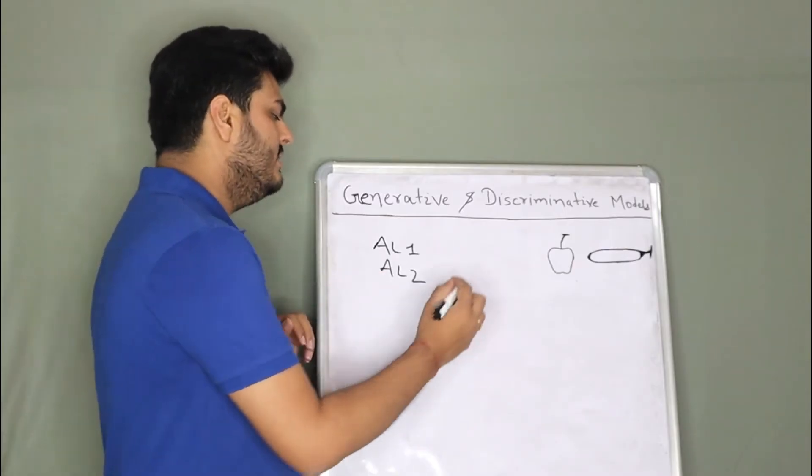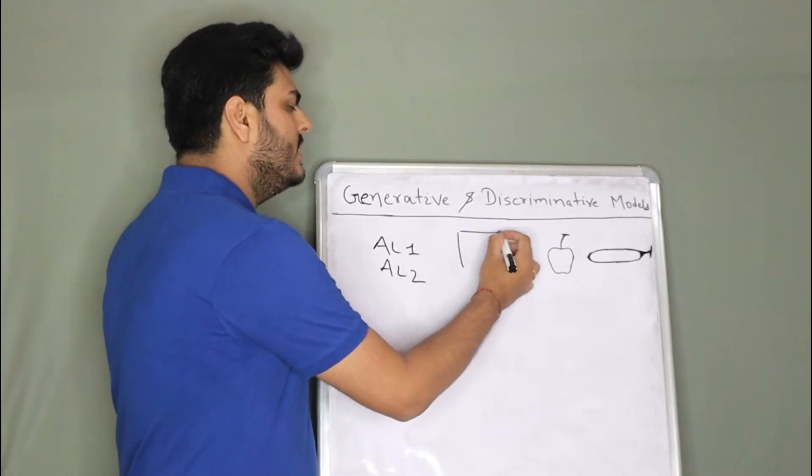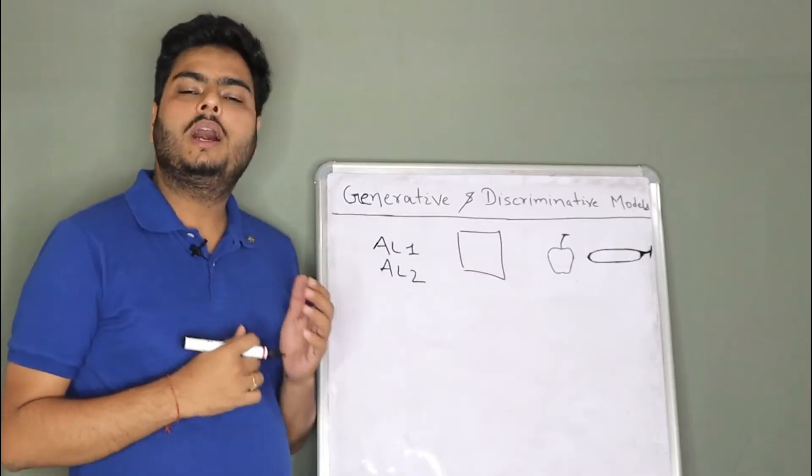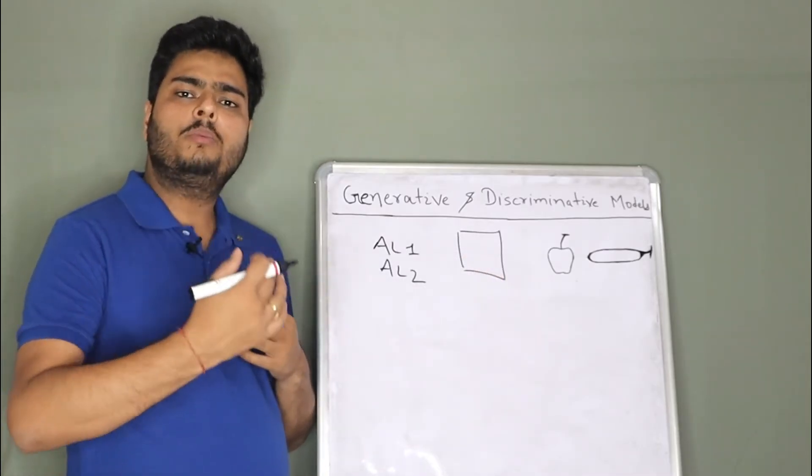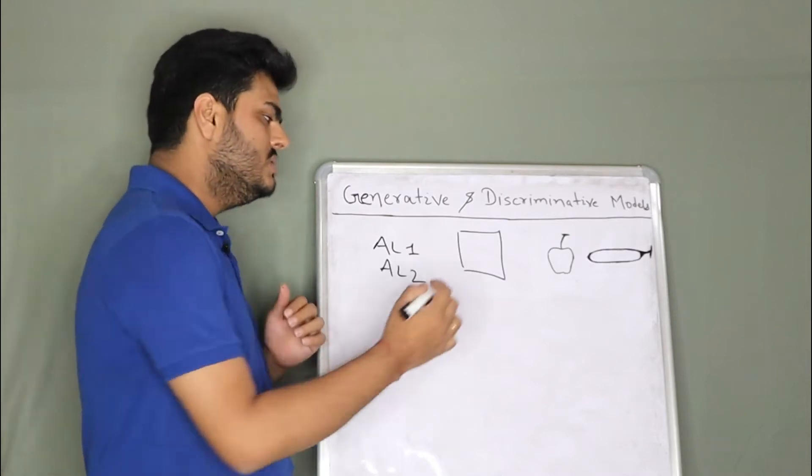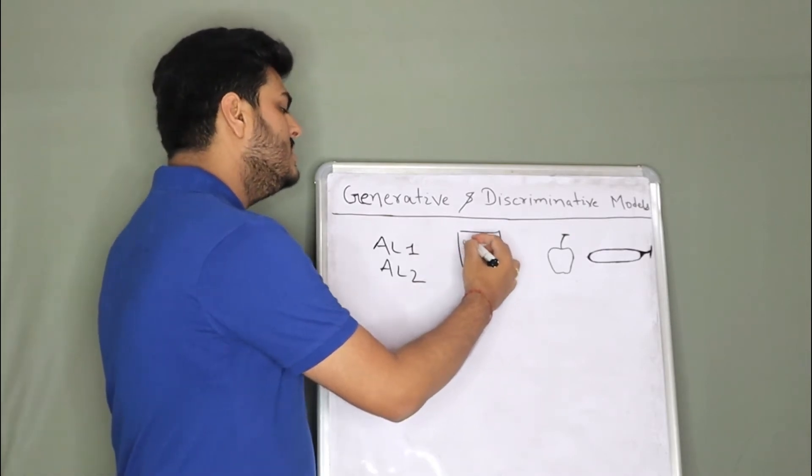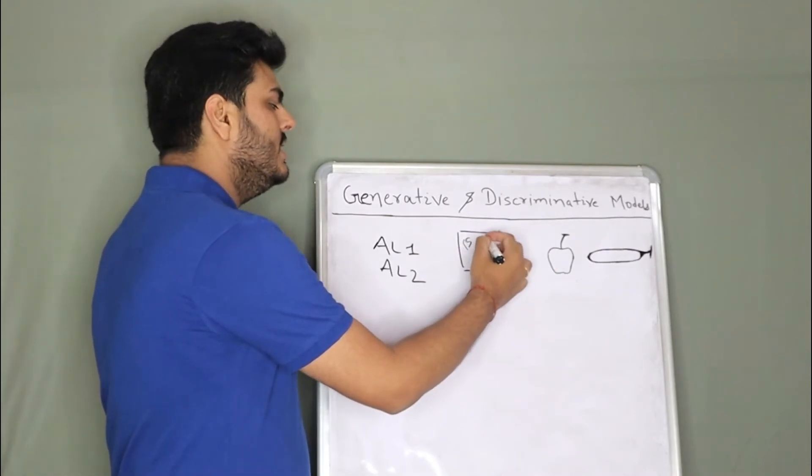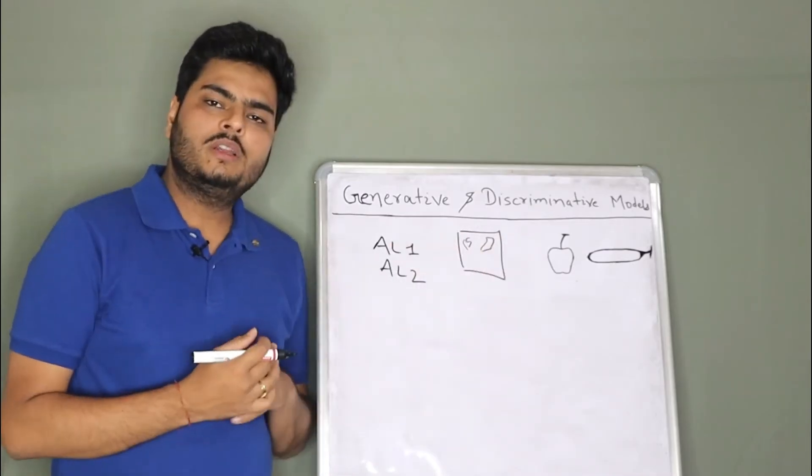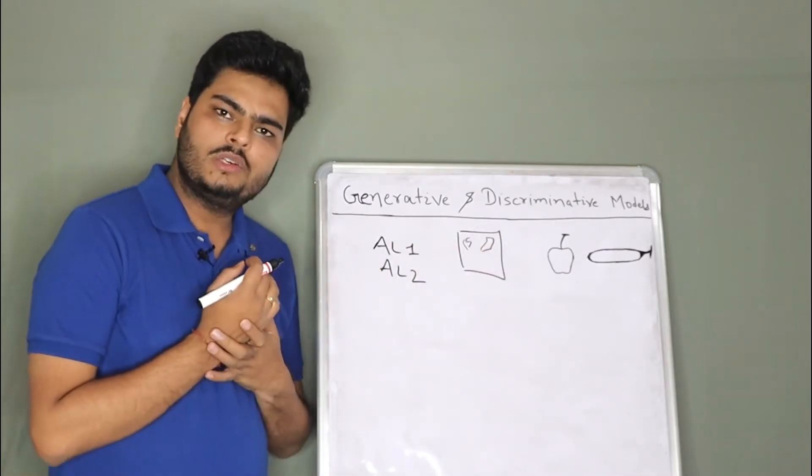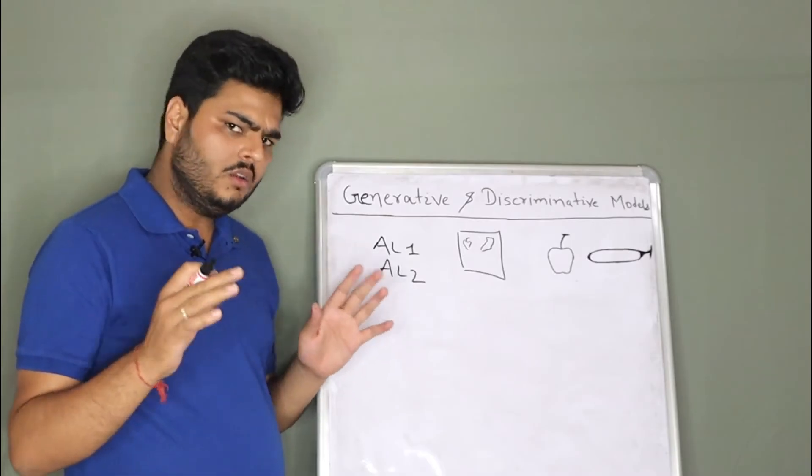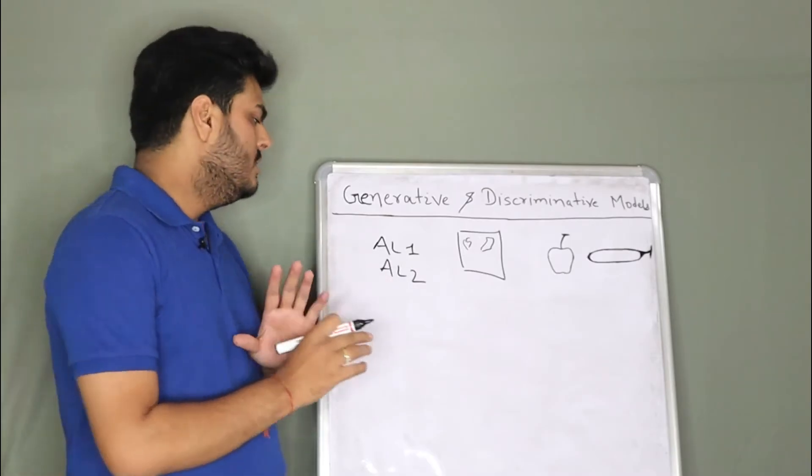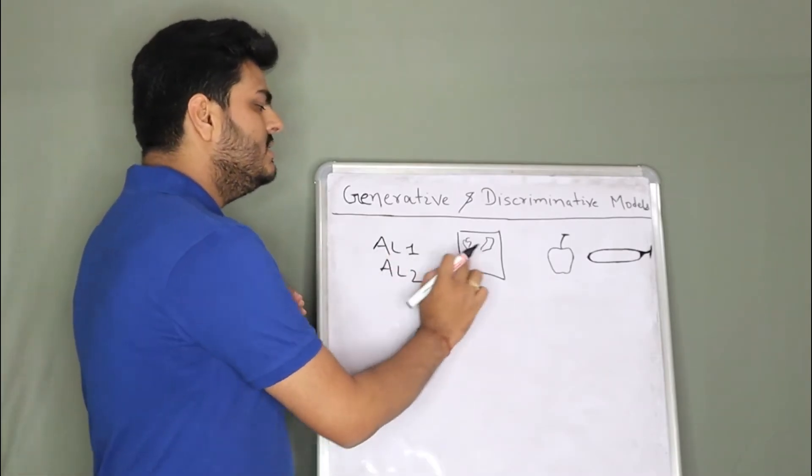What this guy did is, he took a piece of paper and started drawing how apple looks like and how banana looks like. So he started drawing an apple like this, he started drawing a banana like this. And once done, this guy tells me, hey Aman, whatever you are showing me is an apple. Fine, good answer, right answer.